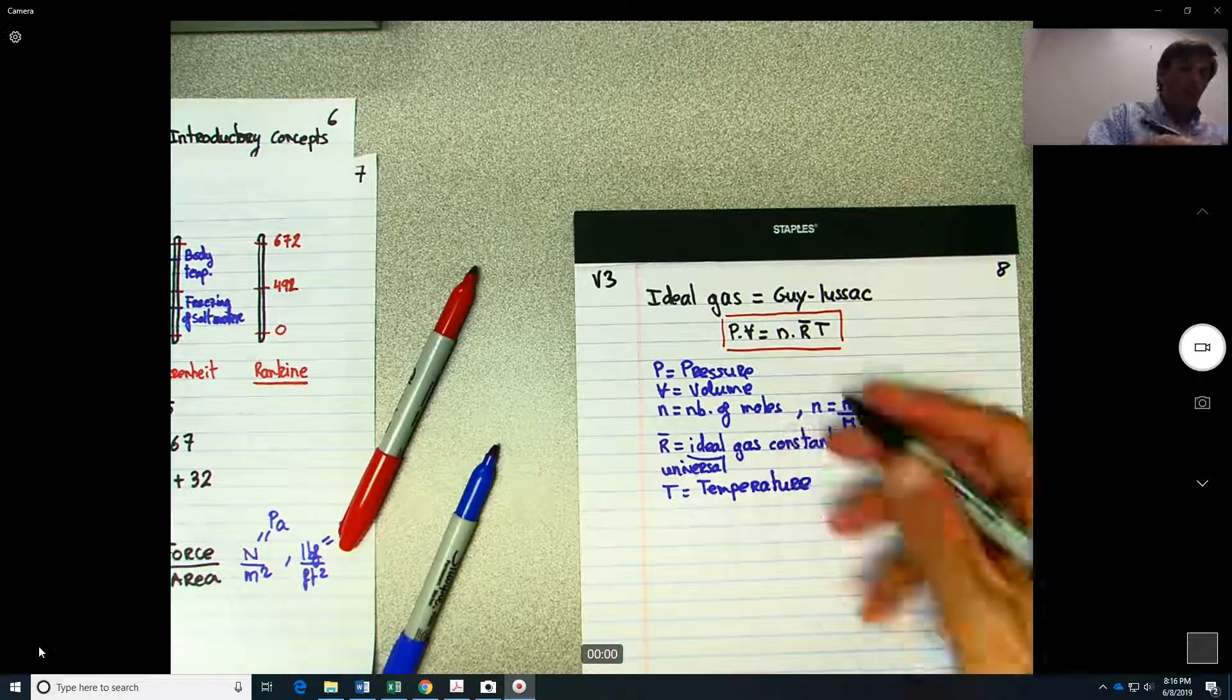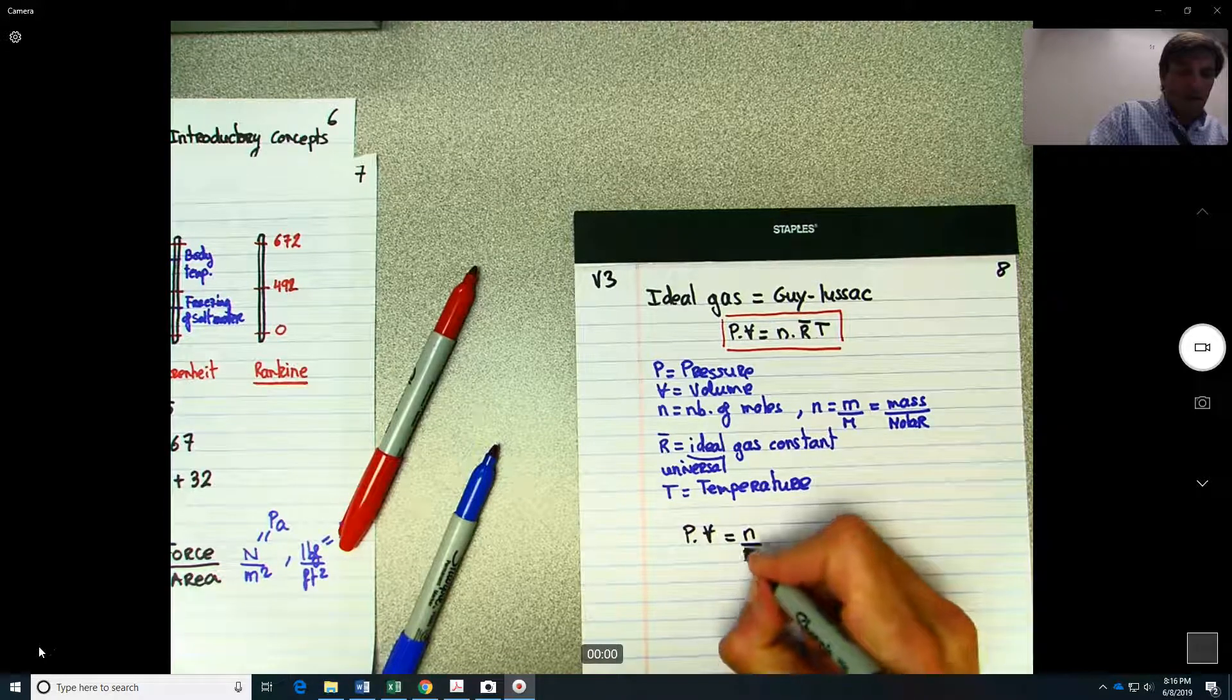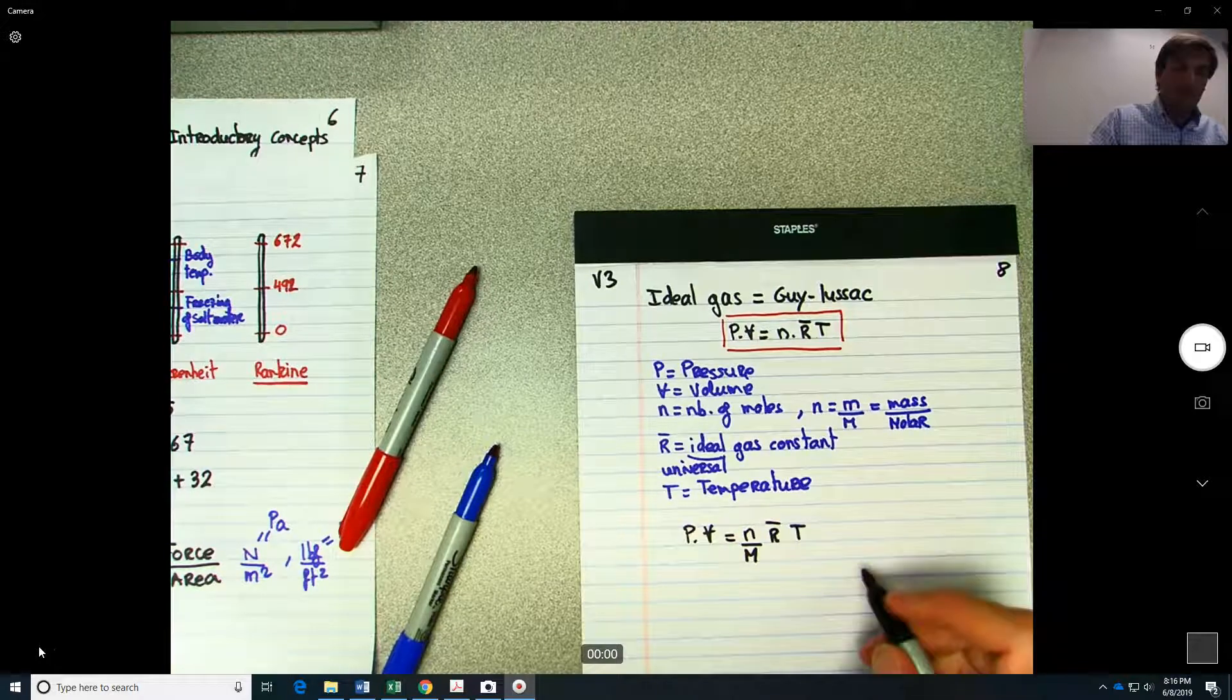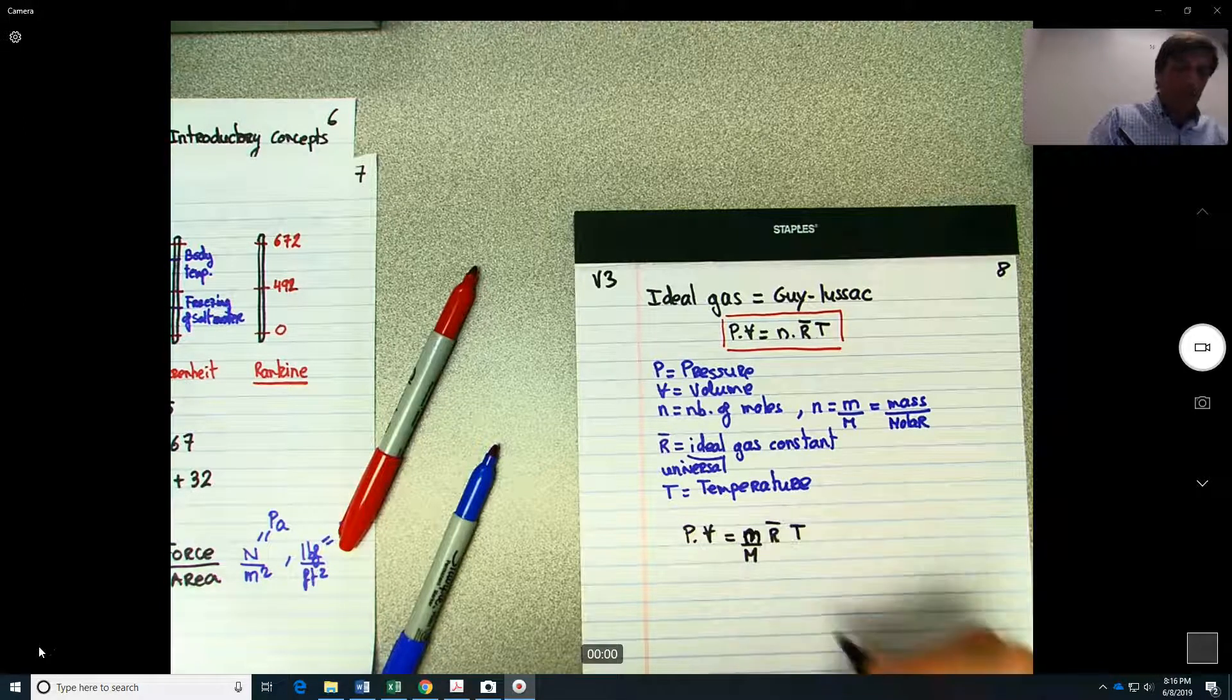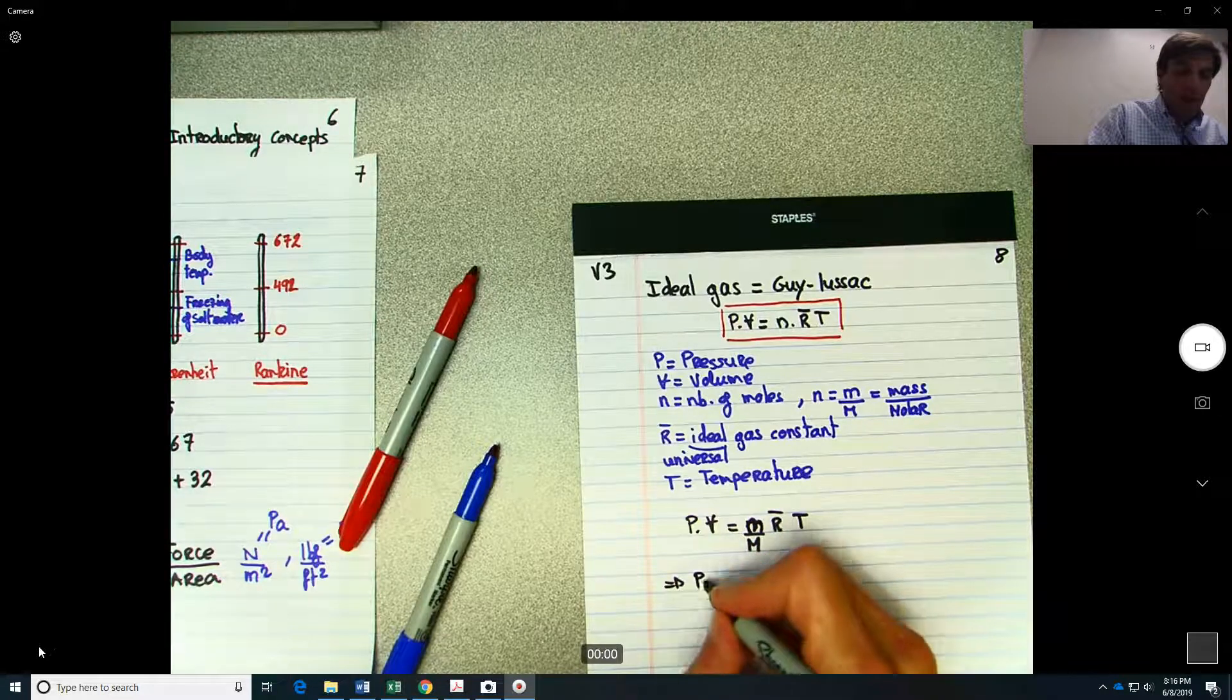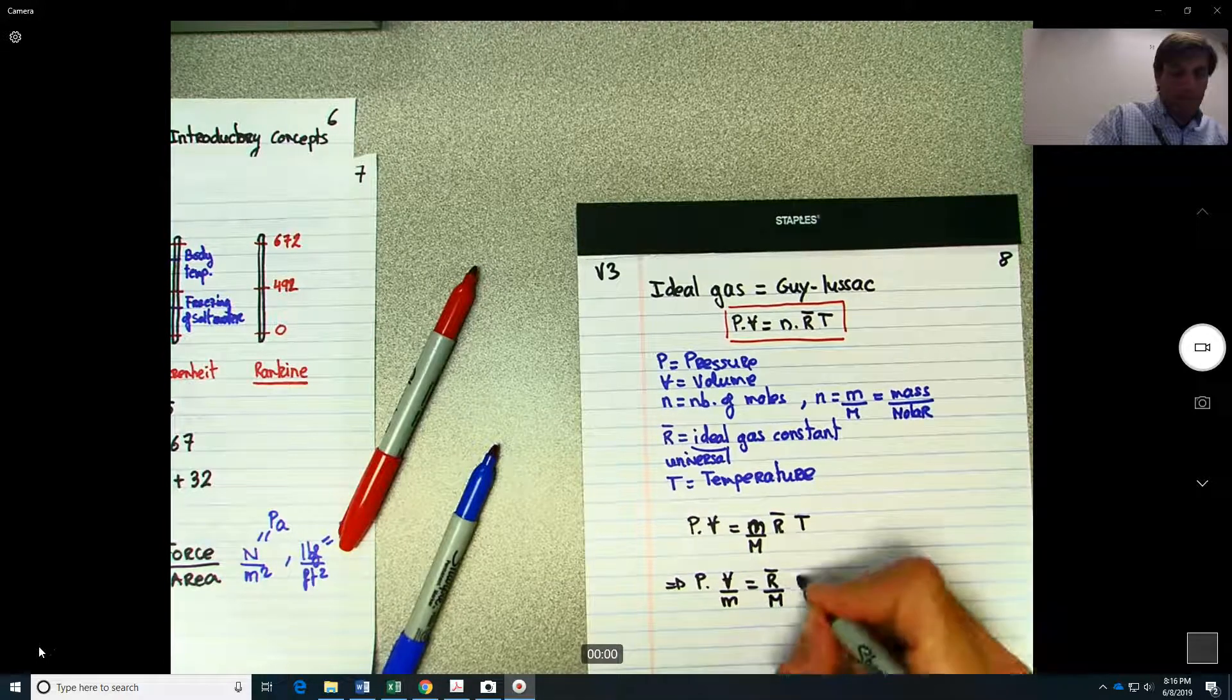So we just rewrite the above expression. PV equals N over M times RT. If we move, it will be, sorry, M over N. So we rewrite this as P equals, sorry, PV over M equals R bar over M times T.